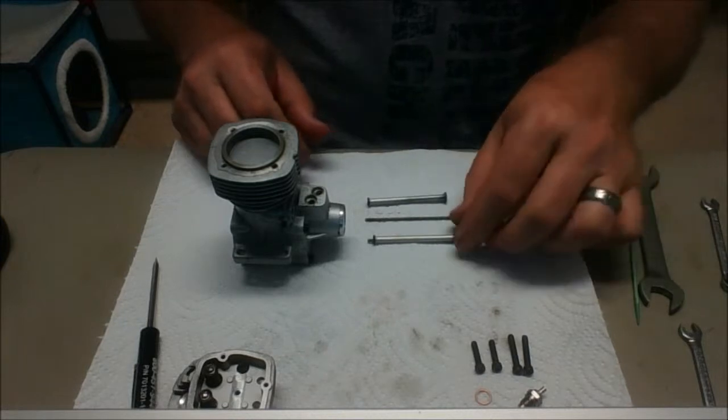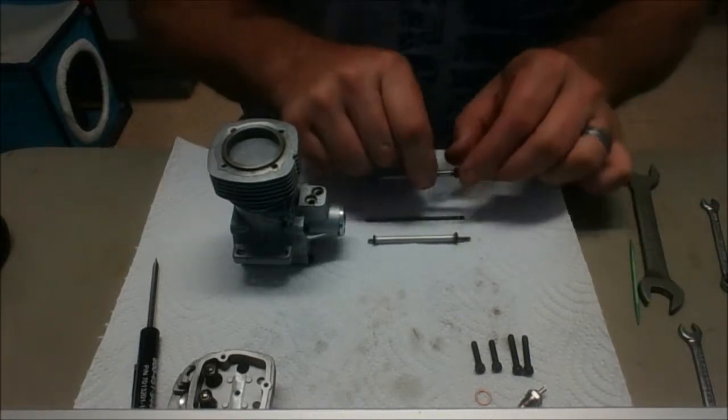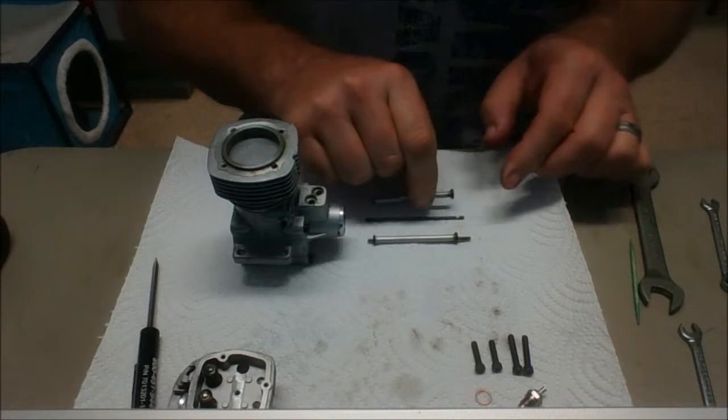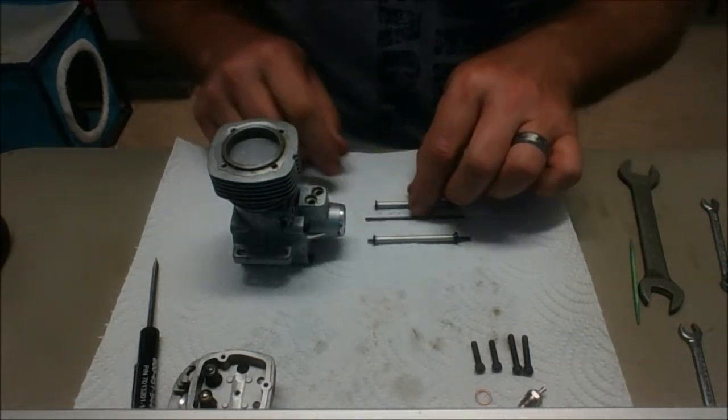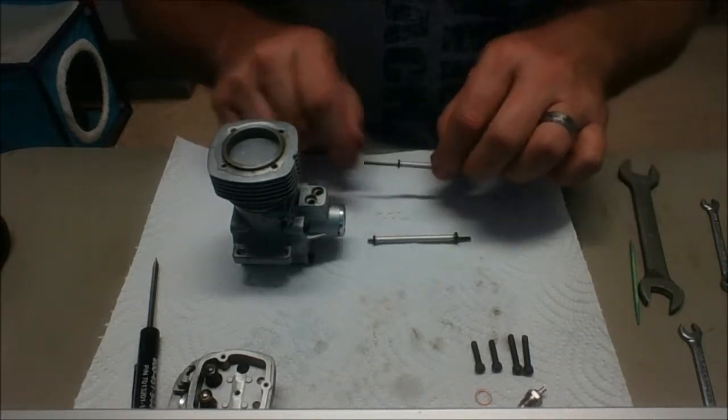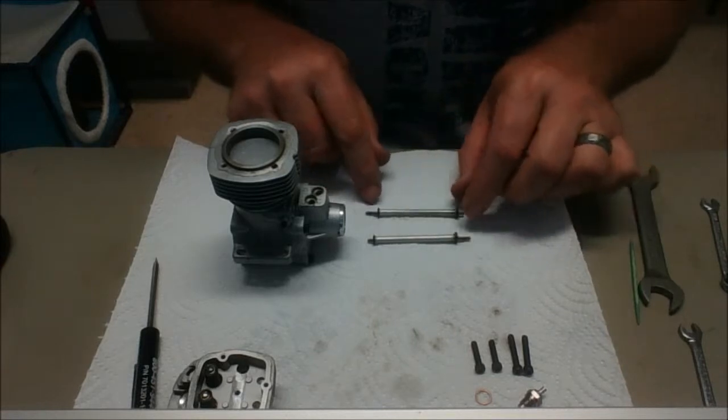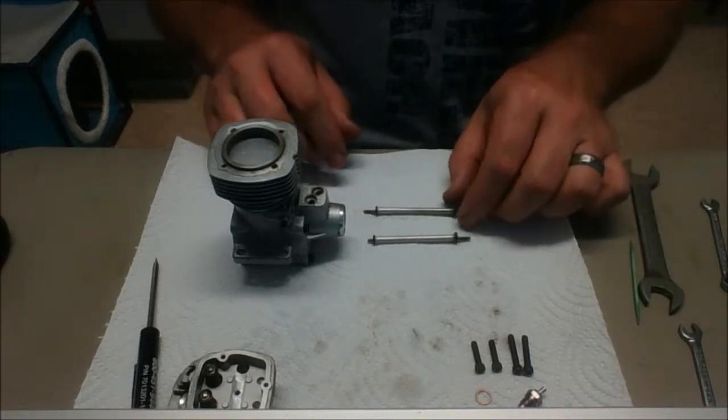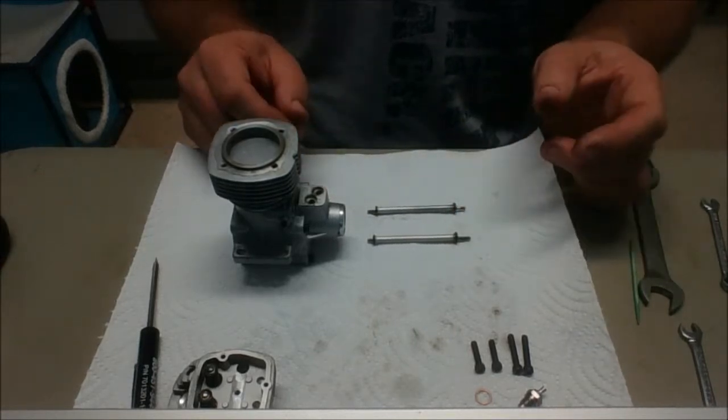You want to make sure you do have these o-rings. These things probably could be replaced fairly easily, probably not from OS. I don't know that they use these types of o-rings anymore, but you might be able to find these at a hardware store or something like that. Now I inspected these o-rings and they're in pretty good shape. They're not broken or dry rotted or flattened out, so I'm going to go ahead and use them.